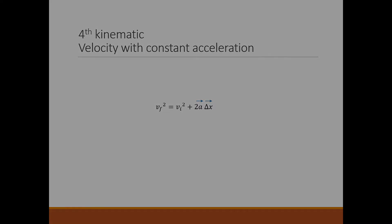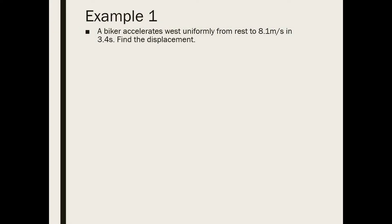Let's go to our first example. A biker accelerates west uniformly from rest to 8.1 meters per second in 3.4 seconds. Find the displacement. To determine which kinematic would be helpful, we need to identify the information that is given. Since it starts from rest, the initial velocity is 0 meters per second. It accelerates to 8.1 meters per second west. Just to be clear, the object is accelerating, but we don't know what the actual acceleration is. We do know that it will reach a velocity of 8.1 meters per second. This all happens in a time of 3.4 seconds. And the problem is asking for displacement.